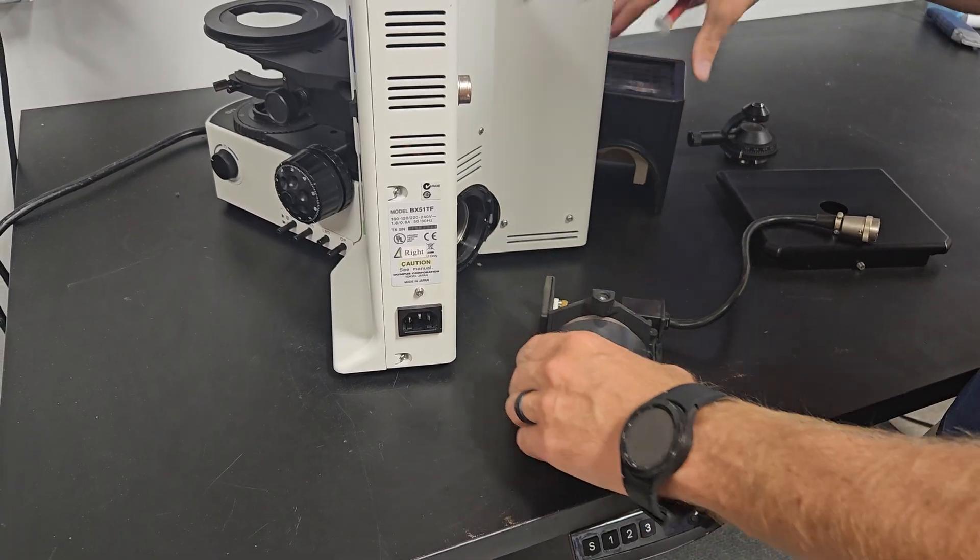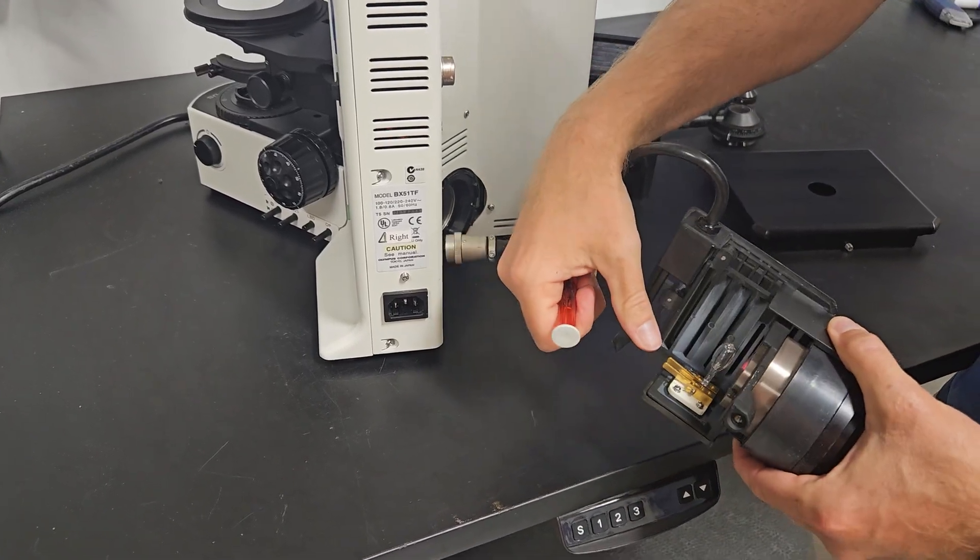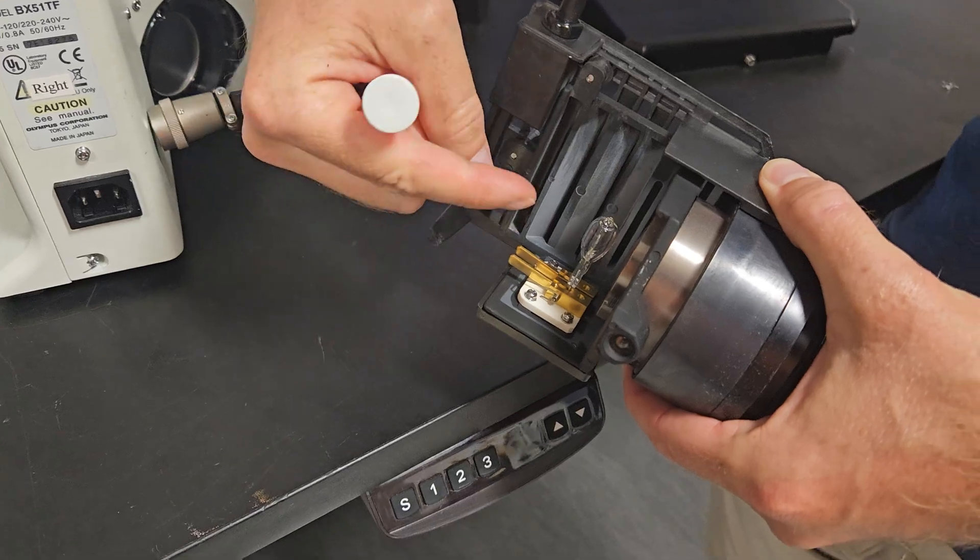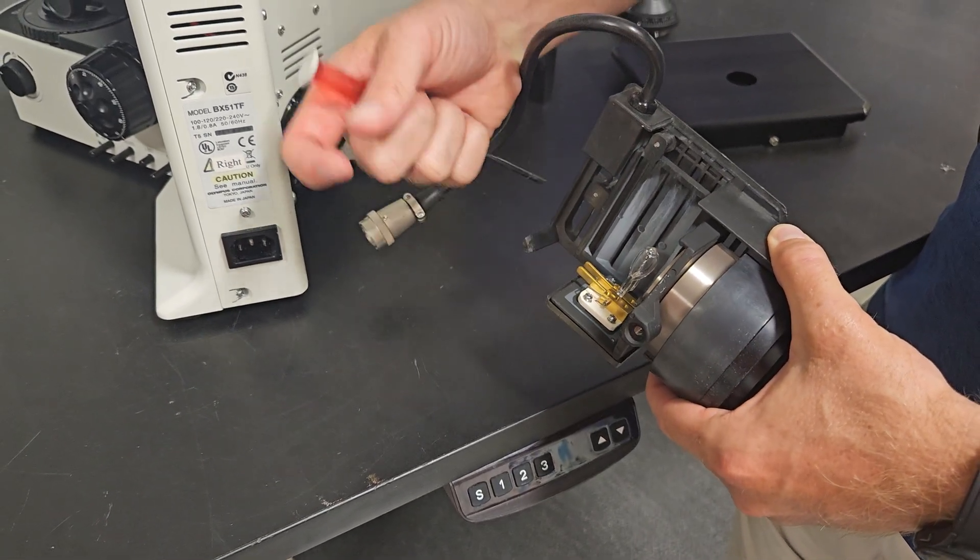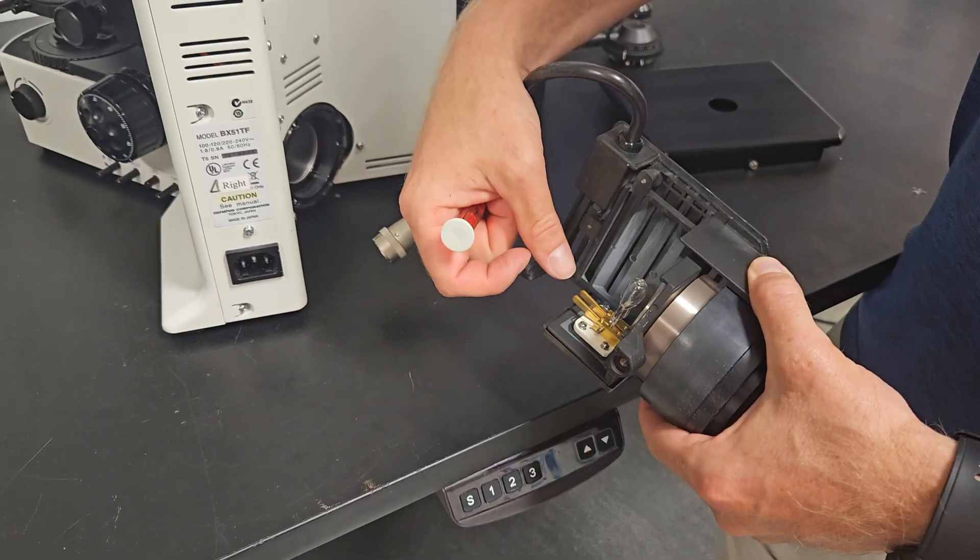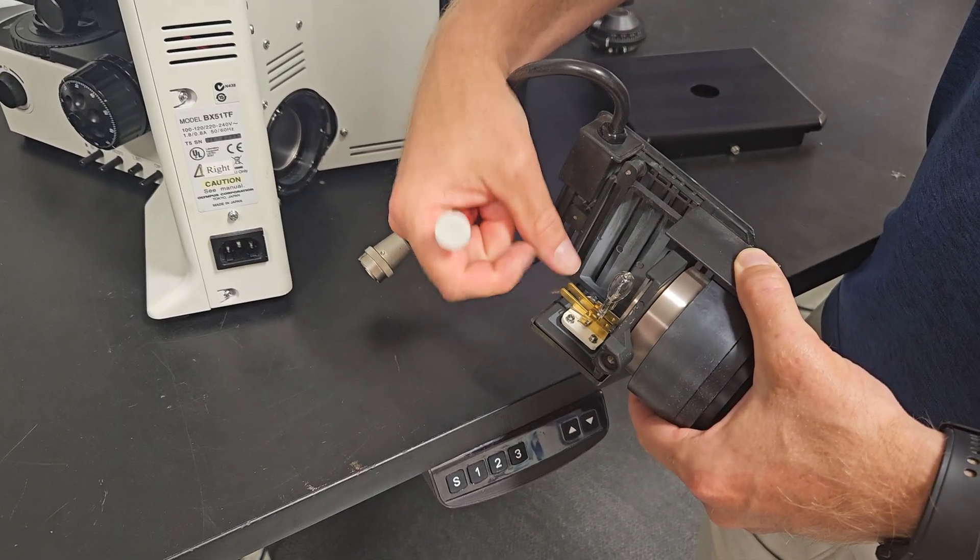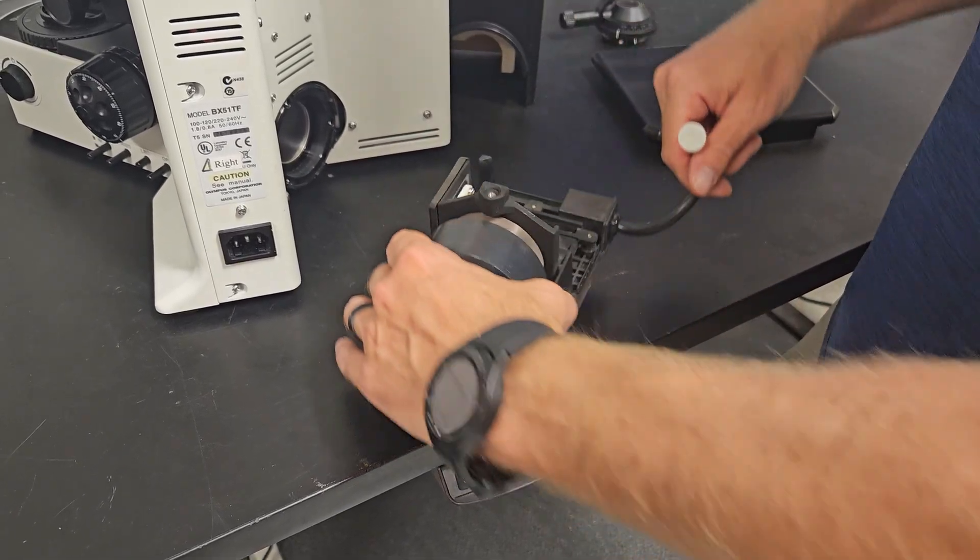I was running this scope, so it's really hot, so we're not going to take it out, but you would press these prongs down, grab the bulb with a Kim wipe, lift it out. And then without touching the new bulb, use the protective wrapper or another Kim wipe, push these pins down and insert the new bulb. So very, very simple.